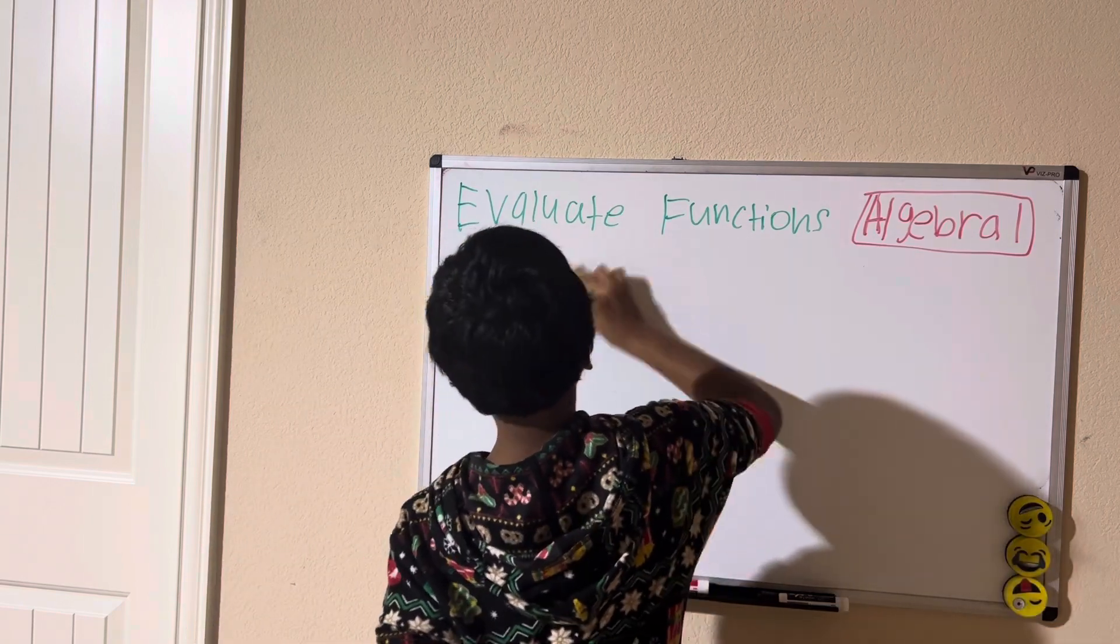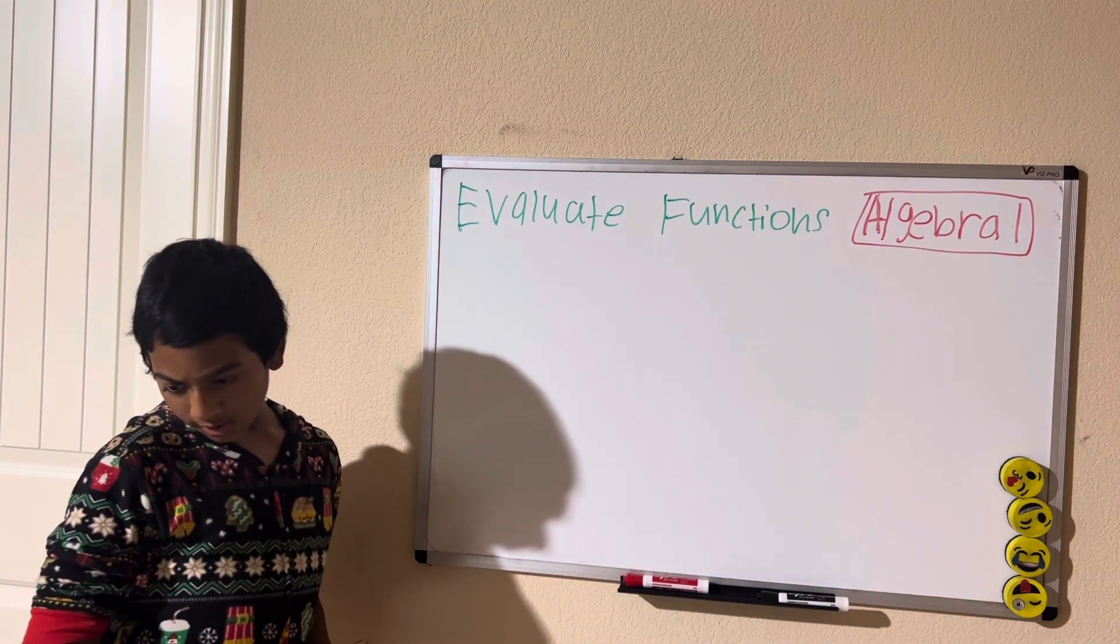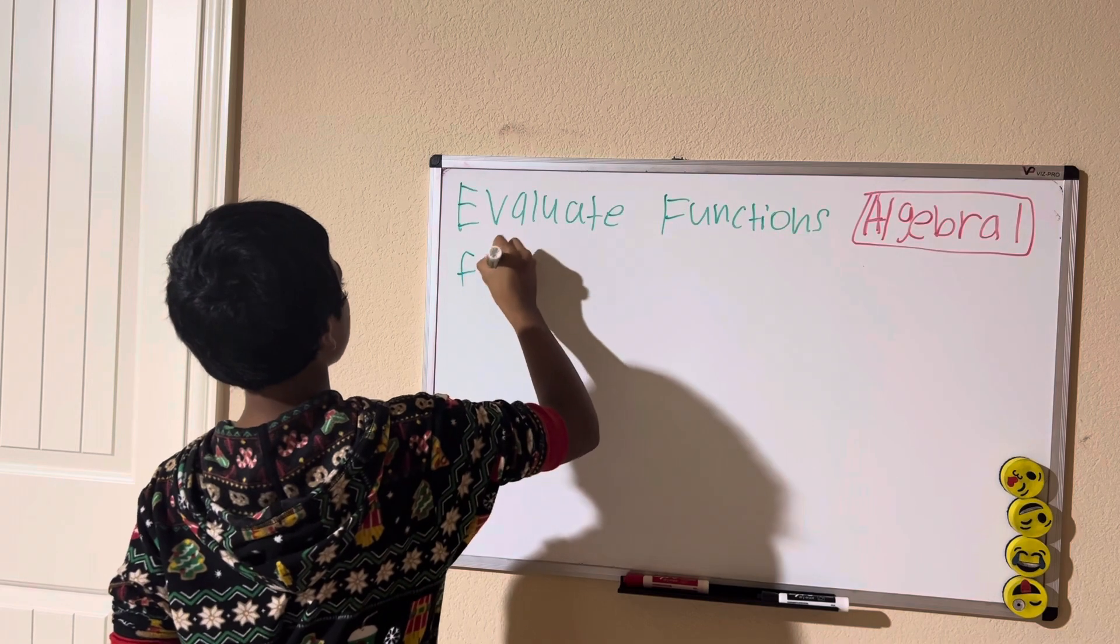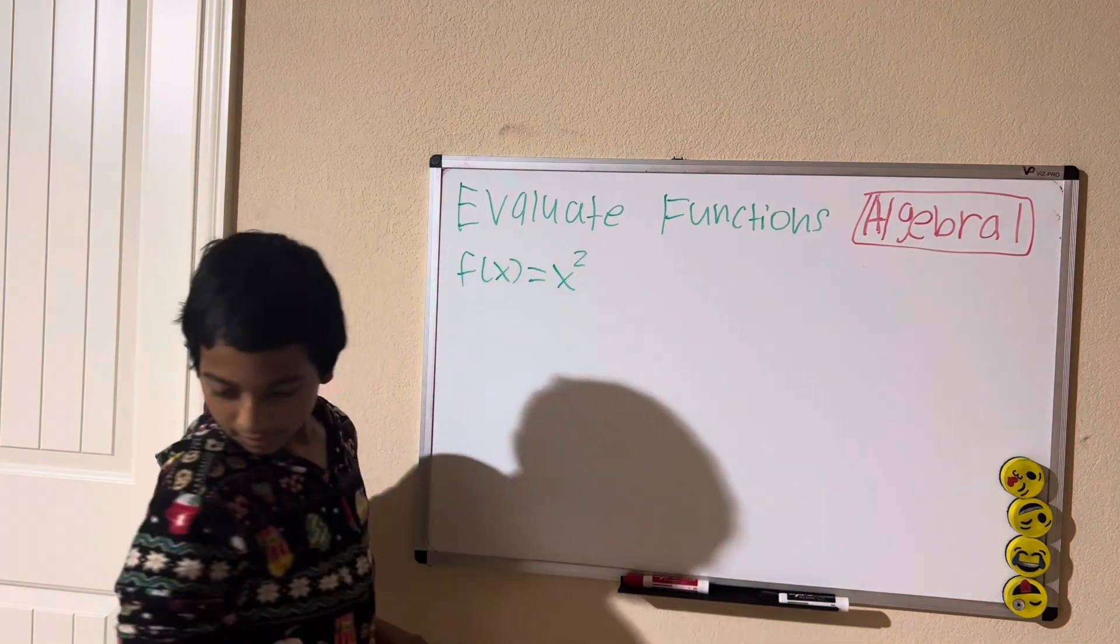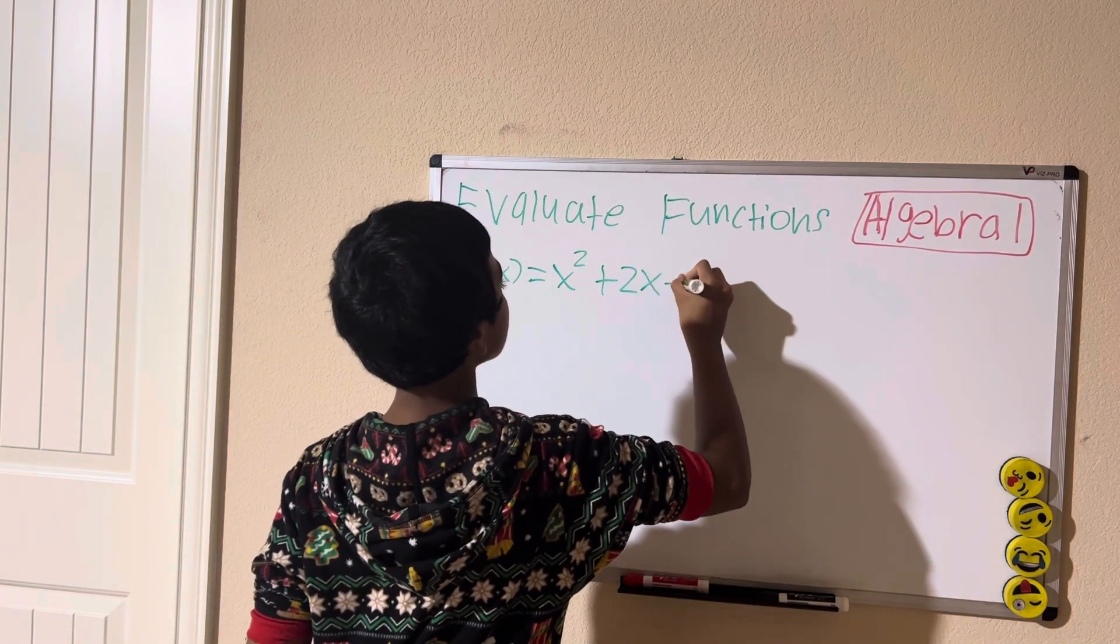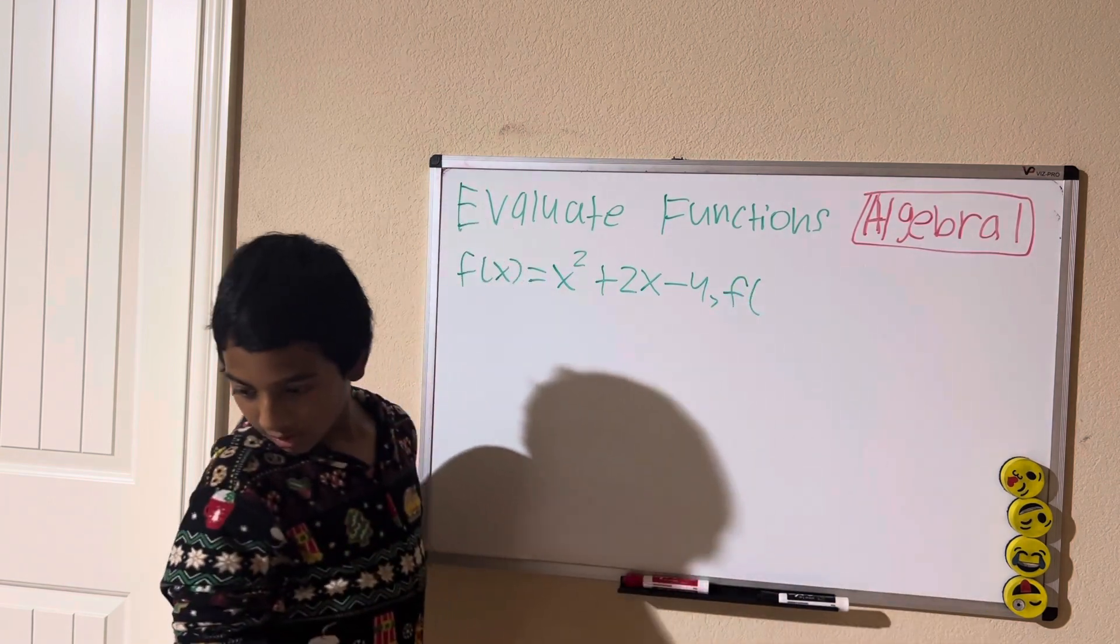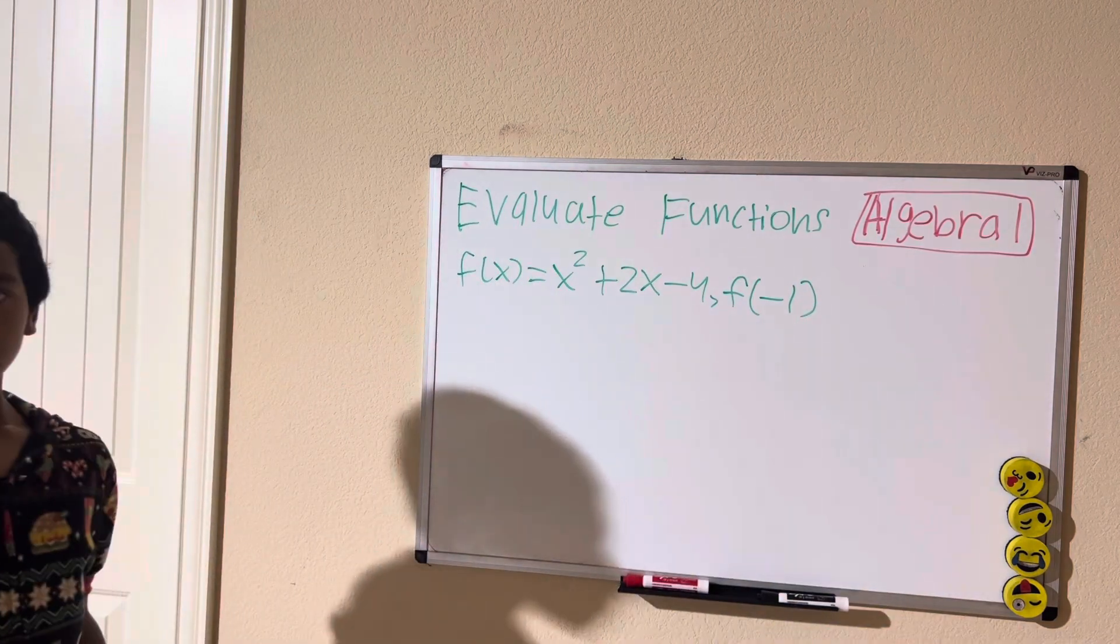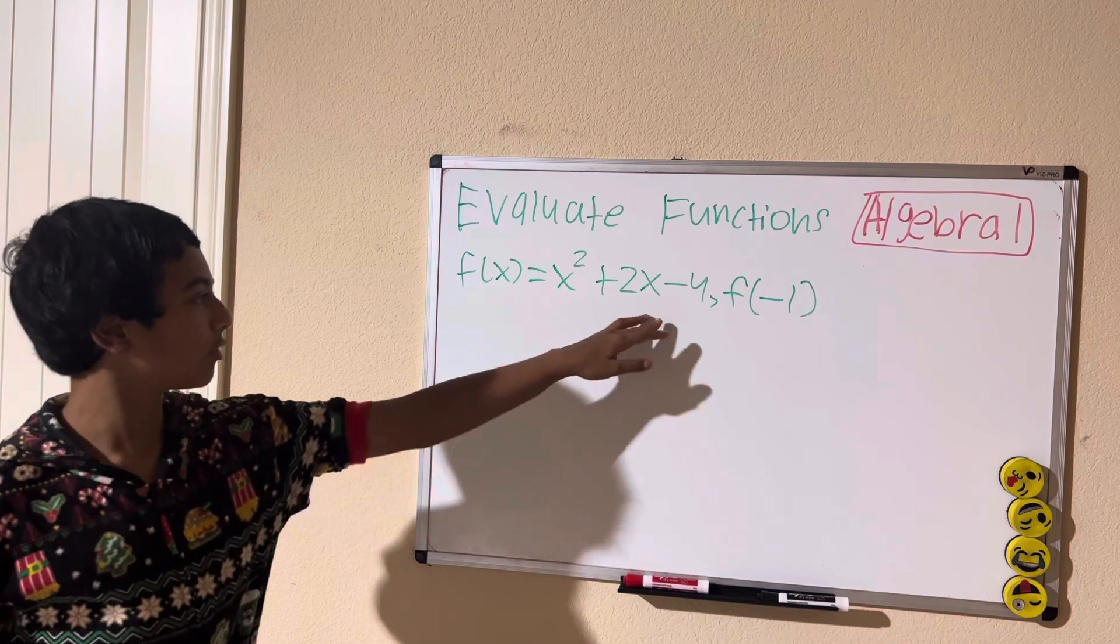Now let's say for the third one we have something a little different. Let's say we have f(x) equals x squared plus 2x minus 4. Find f of negative 1. I encourage you to pause the video and see if you can solve this one.